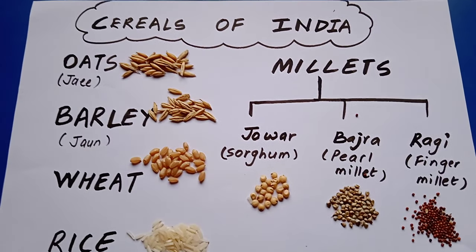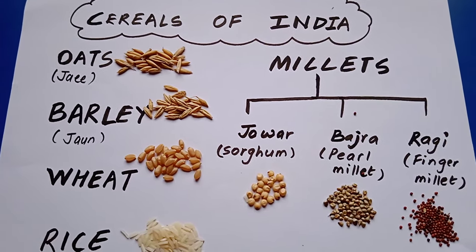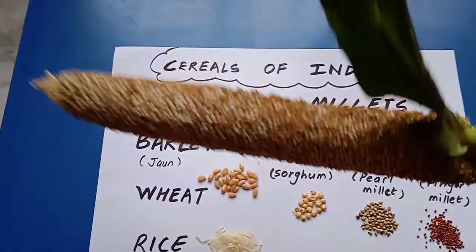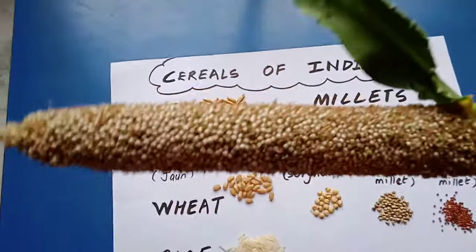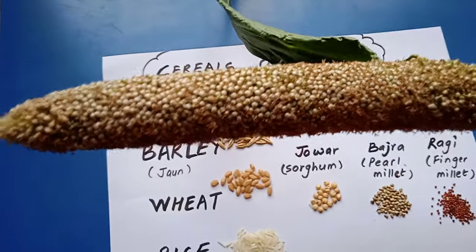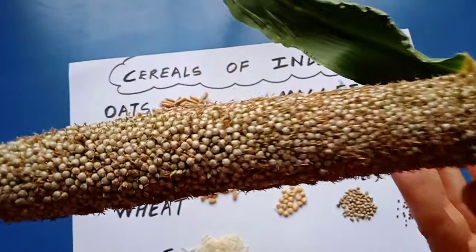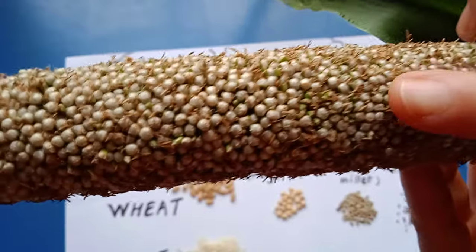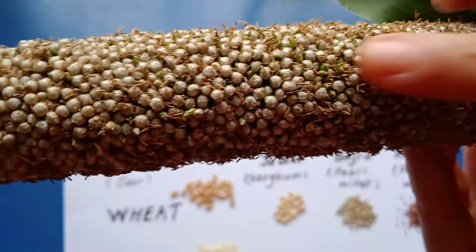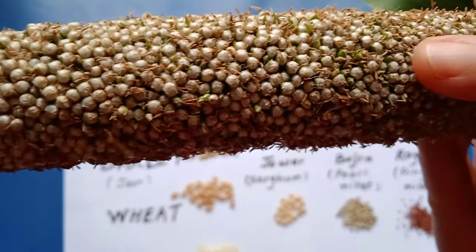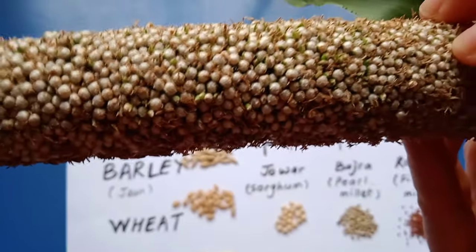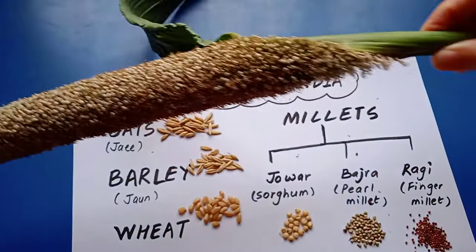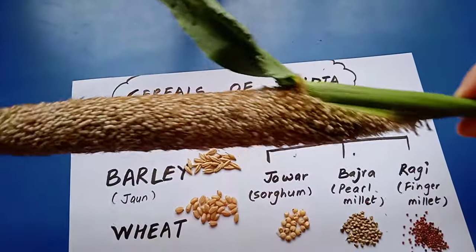Something really interesting I would like to show you - I was able to procure this. This is nothing but your Bajra plant only - this is Pearl Millet. You can see the beautiful grains are coming, they are growing here. They are looking like Moti, they are looking like pearls only - that is why it is called Pearl Millet. This is how it looks like, you can see this huge leaf here.